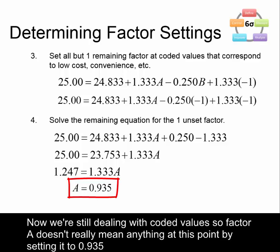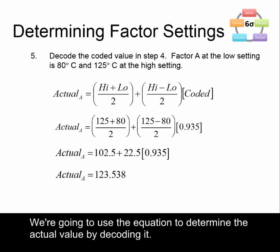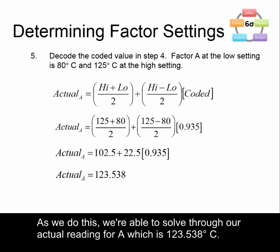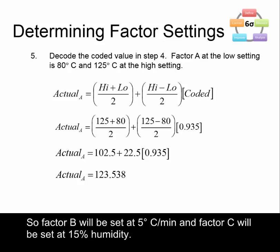Since we're dealing with coded values, A equals 0.935 doesn't mean anything directly, so we need to decode it. Factor A had a low setting of 80°C and a high setting of 125°C. We use the decoding equation: (high plus low) divided by 2, plus (high minus low) divided by 2 times the coded value. This gives us an actual value for A of 123.538 degrees Celsius. Factor B will be set at 5 degrees Celsius per minute and factor C at 15% humidity.